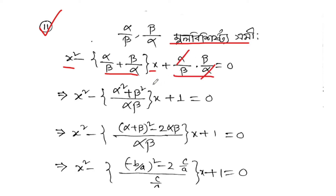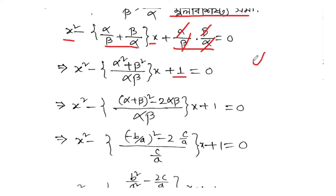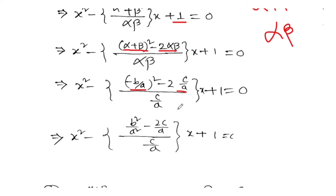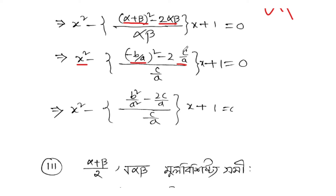Now we go to another problem: alpha by beta plus beta by alpha. I want to find alpha squared plus beta squared. We know alpha squared plus beta squared equals (alpha plus beta) whole squared minus 2 alpha beta. So substituting: alpha plus beta equals minus b by a, squared minus 2 times c by a. That gives b squared over a squared minus 2c by a.